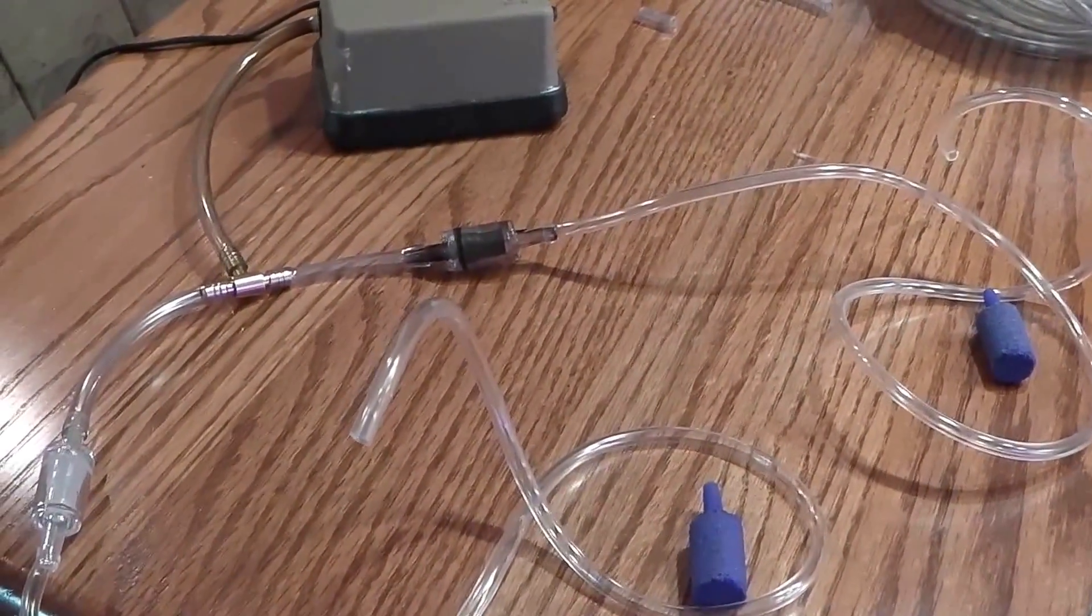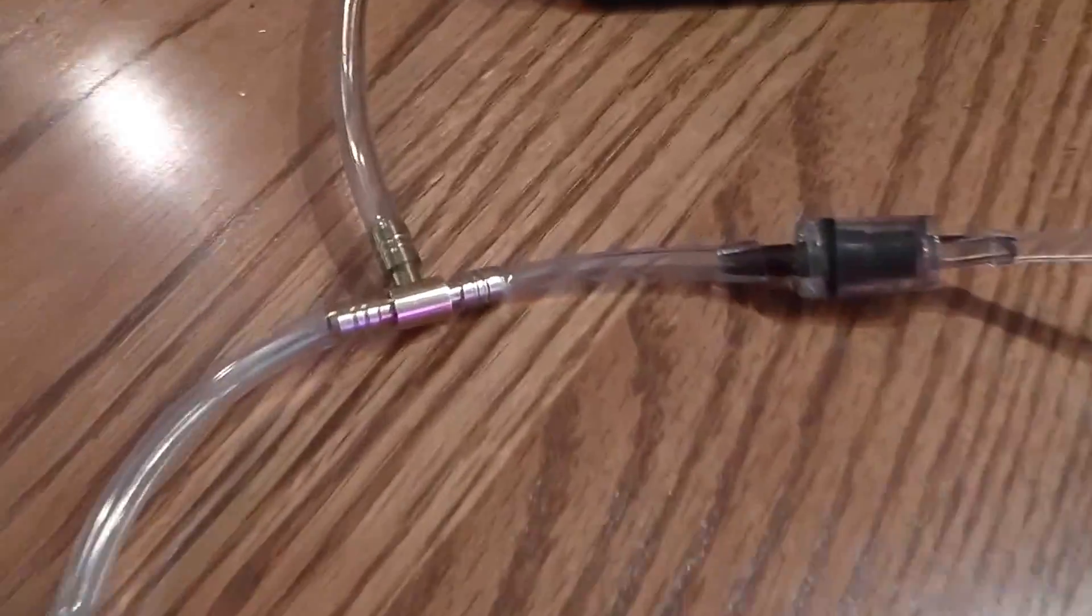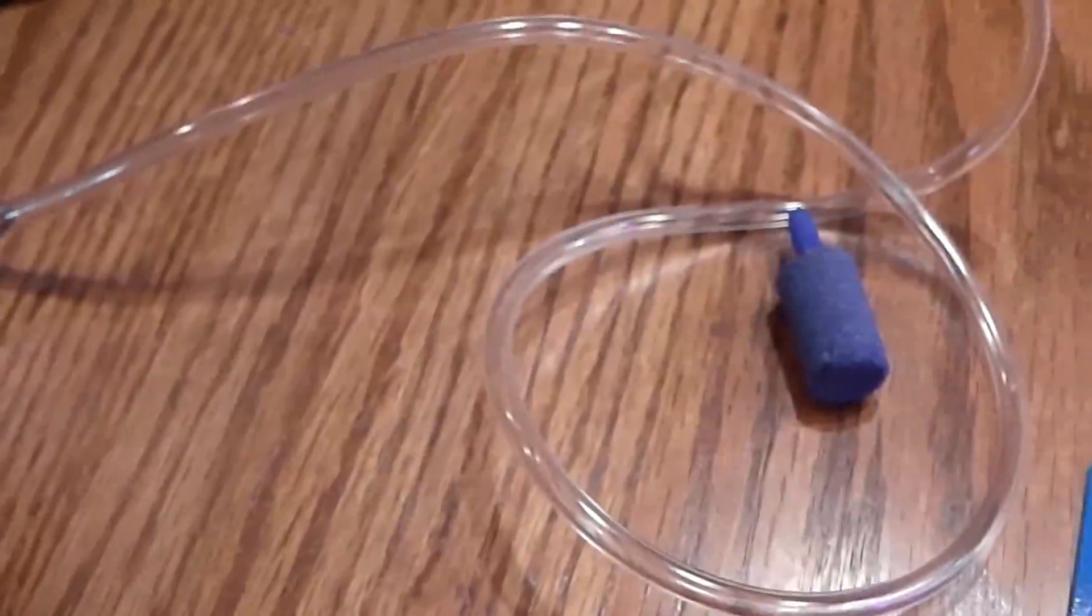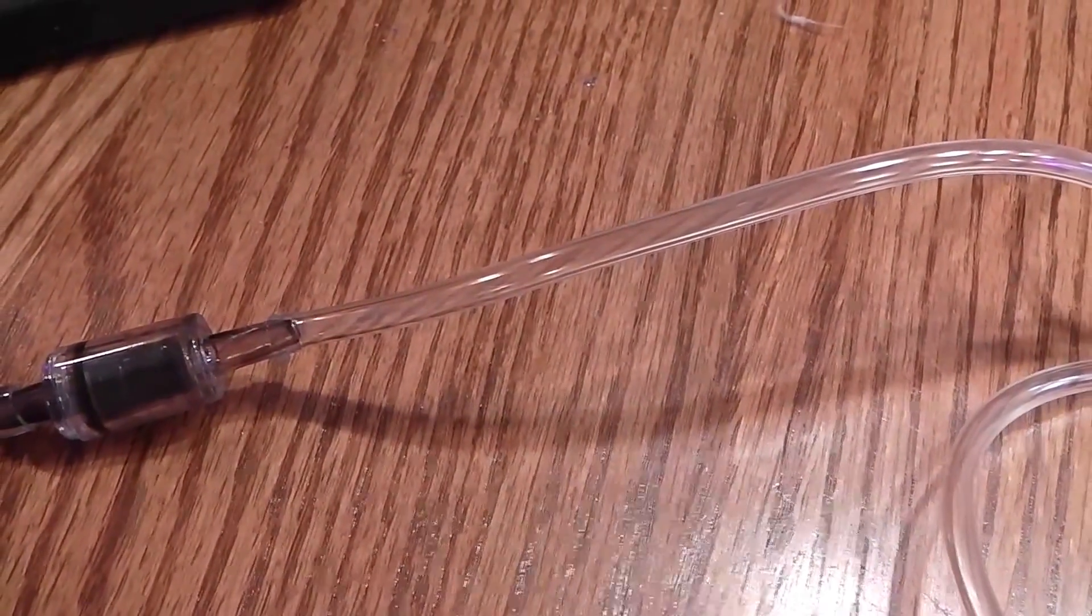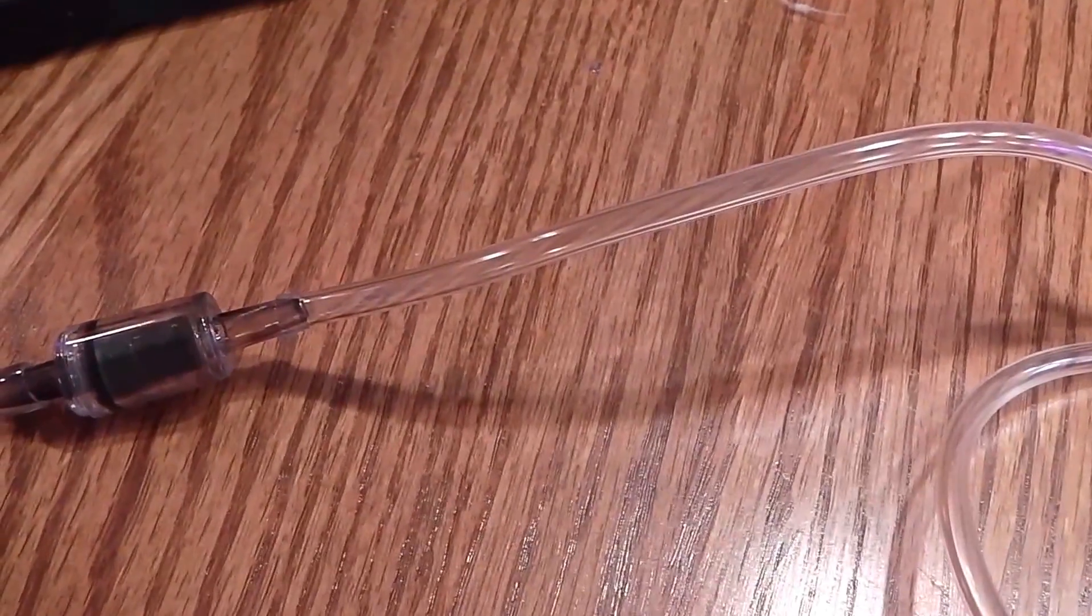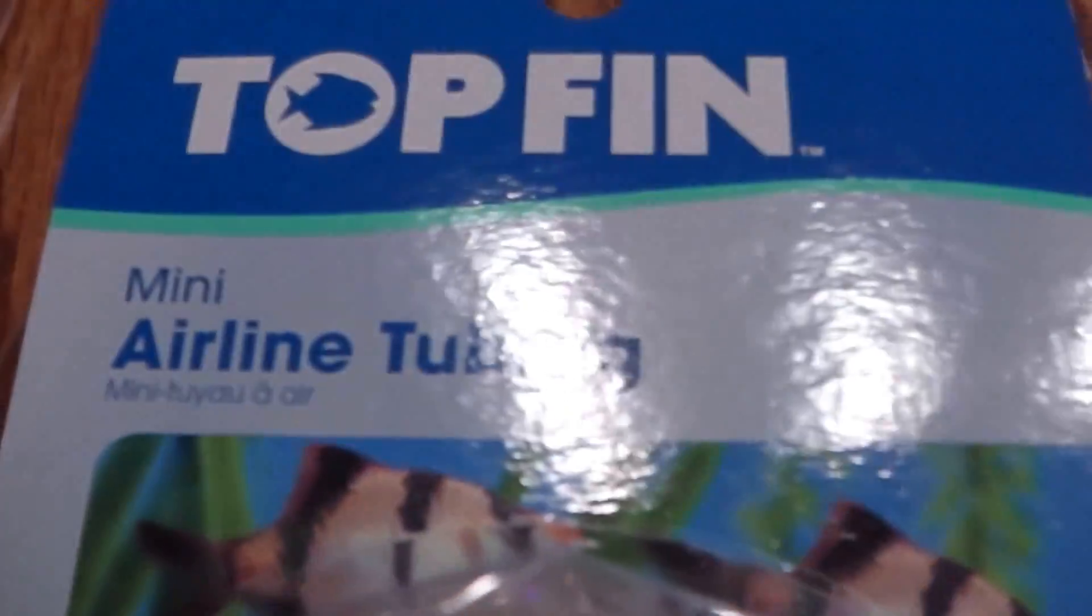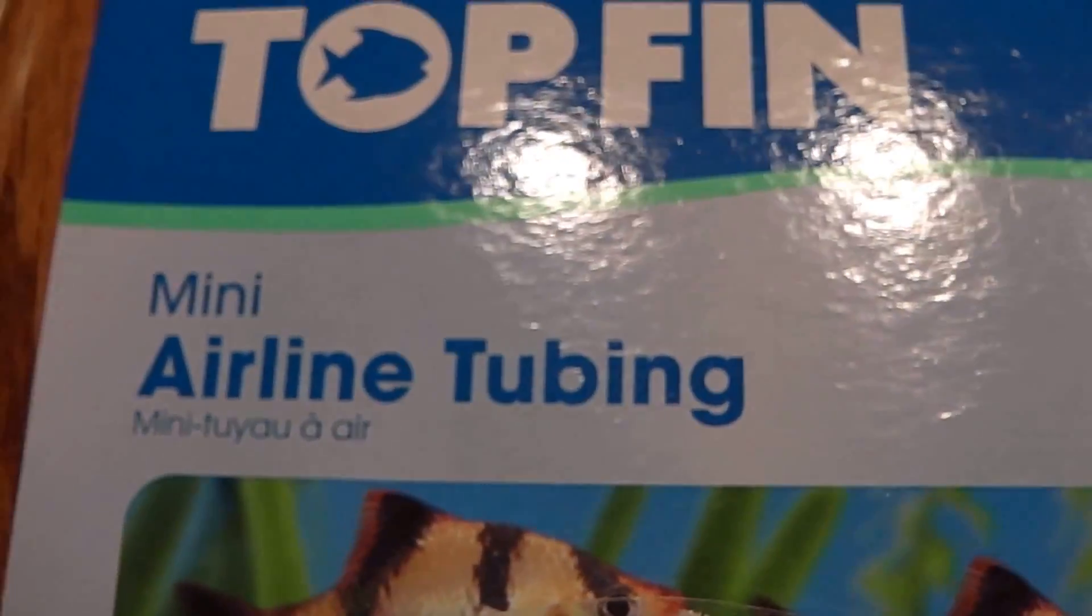Okay, so we've got it all hooked up from the splitter into the check valves. And one thing to pay attention to is the diameter of the hose that can actually fit into the AeroGarden. It has to be smaller than quarter inch outside diameter. So we went with the mini tubing available from most pet stores.